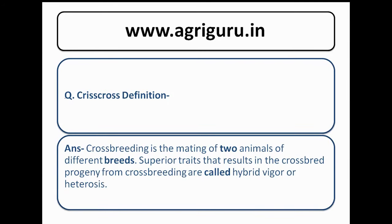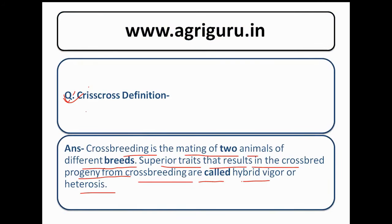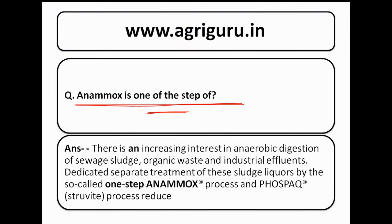Question number 43 is about the definition of crossbreeding. Crossbreeding is the mating of two animals of different breeds. The superior traits that result in crossbred progeny are called hybrid vigor or heterosis. We are not aware of the proper question that came in the examination — if you know, comment below. Question number 45: Anammox is one step of what process? We don't have the correct option — if you have it, comment below.